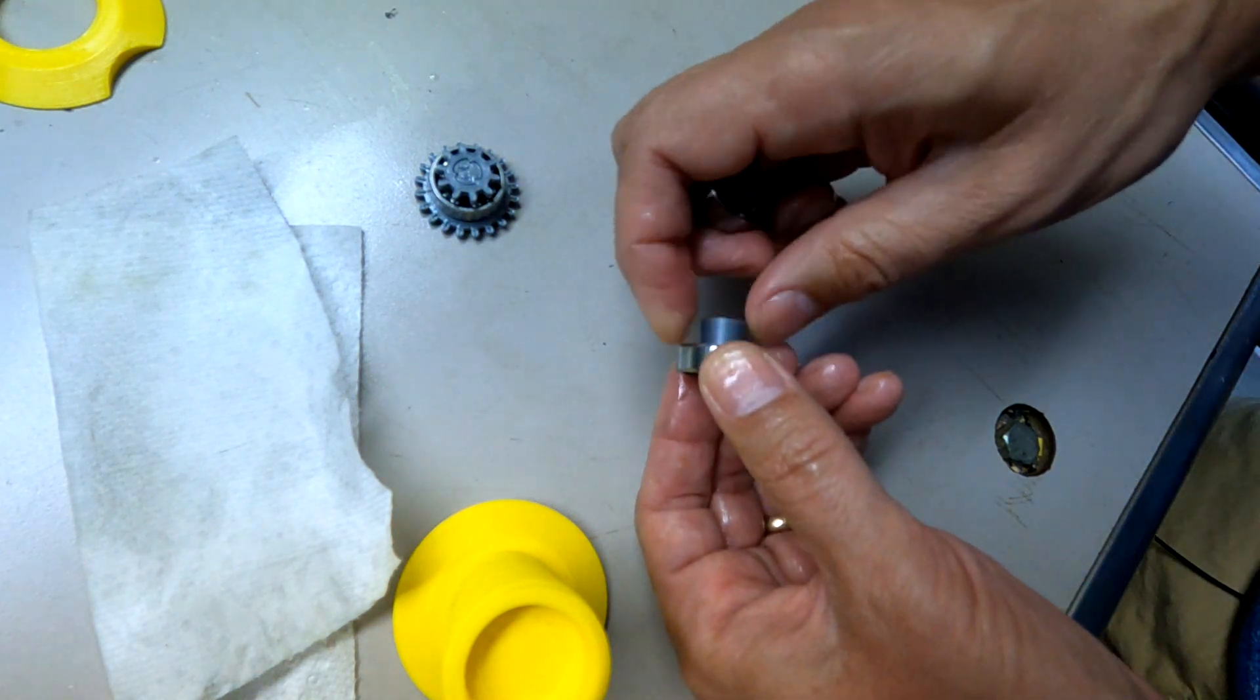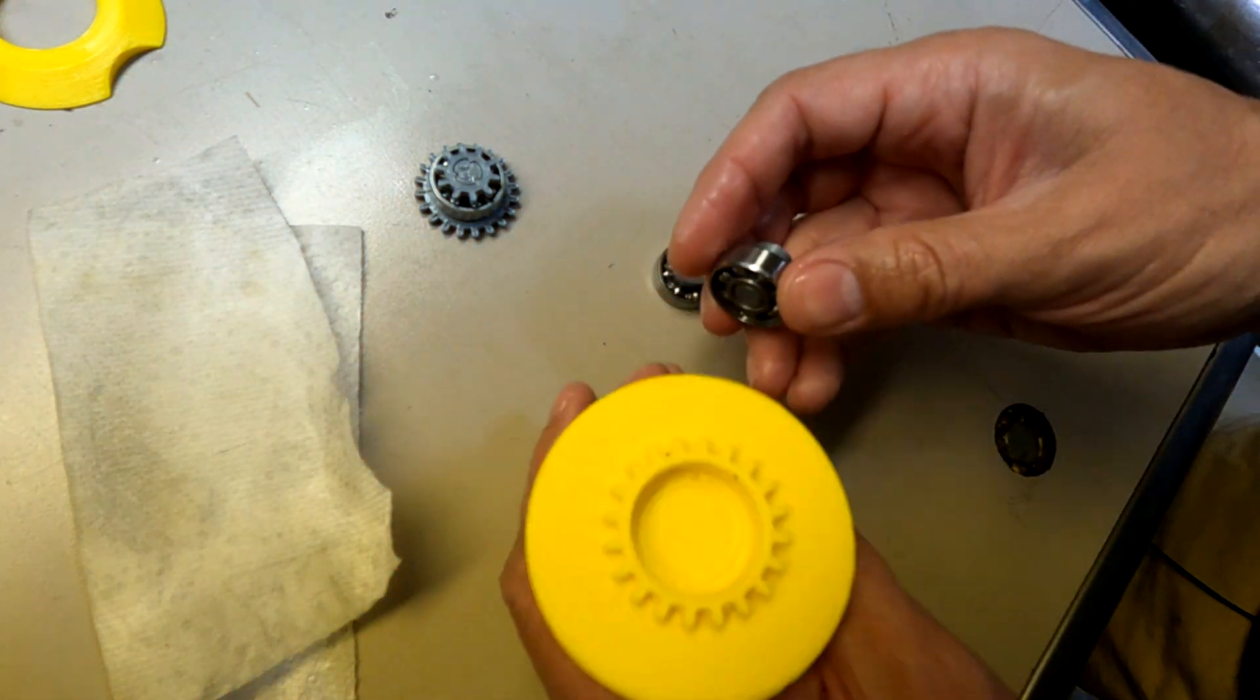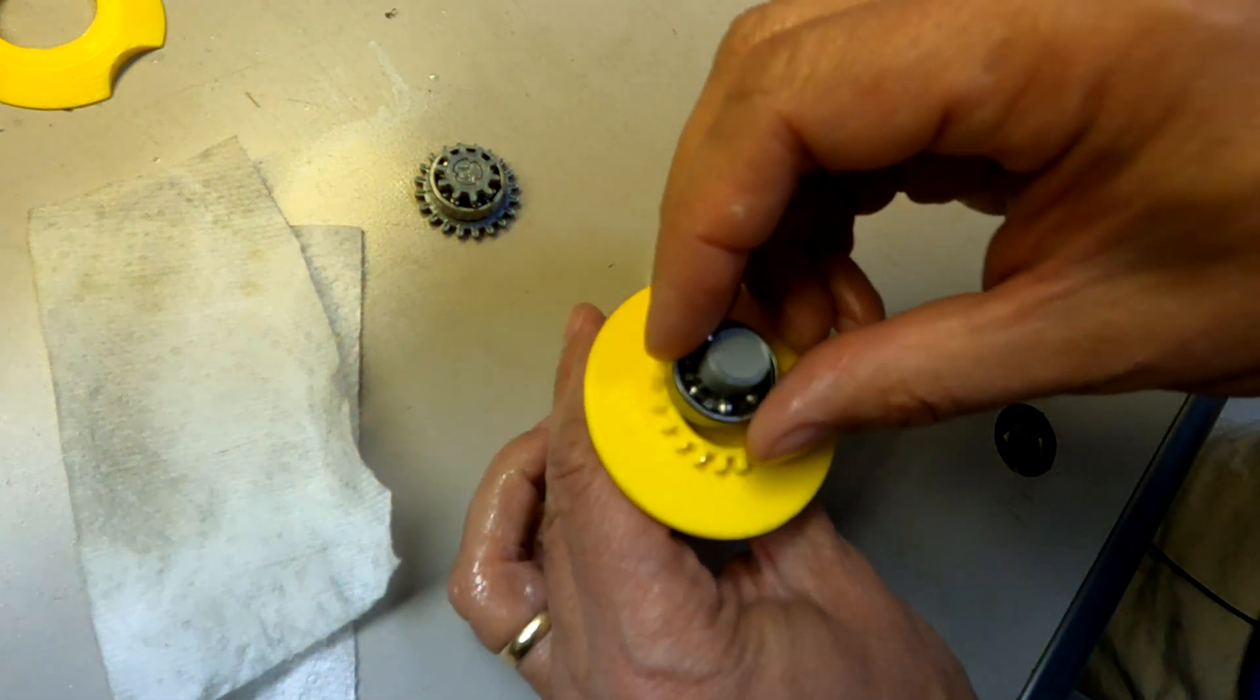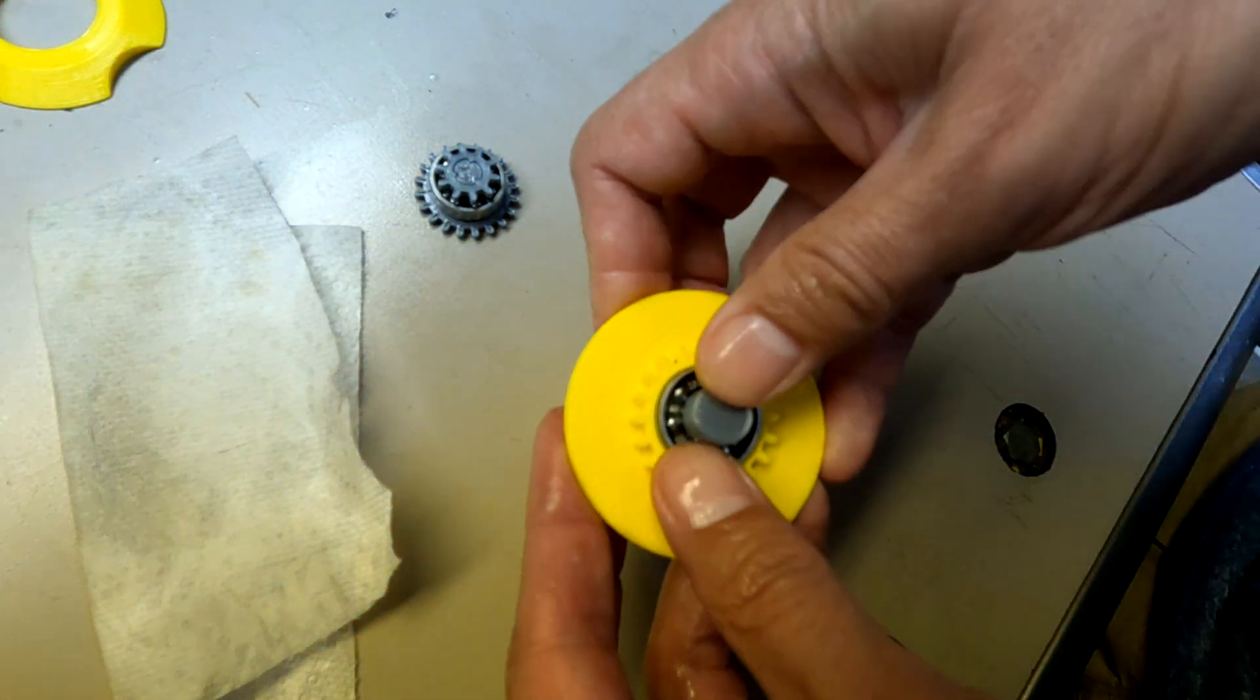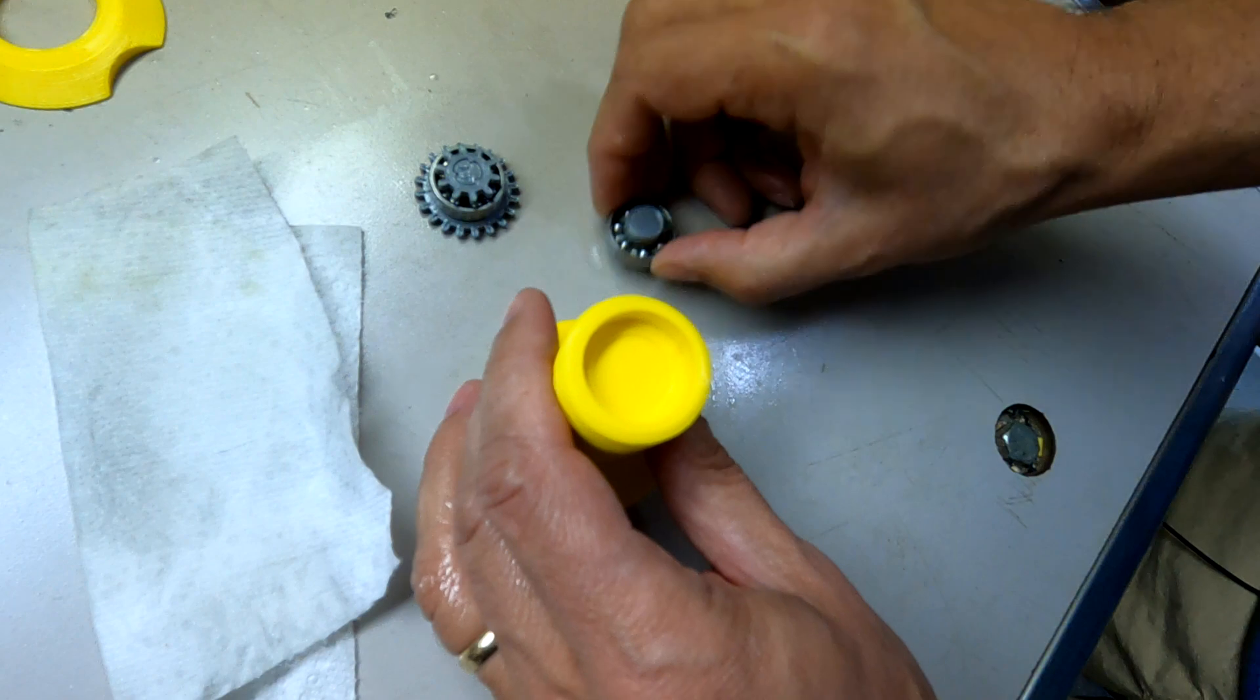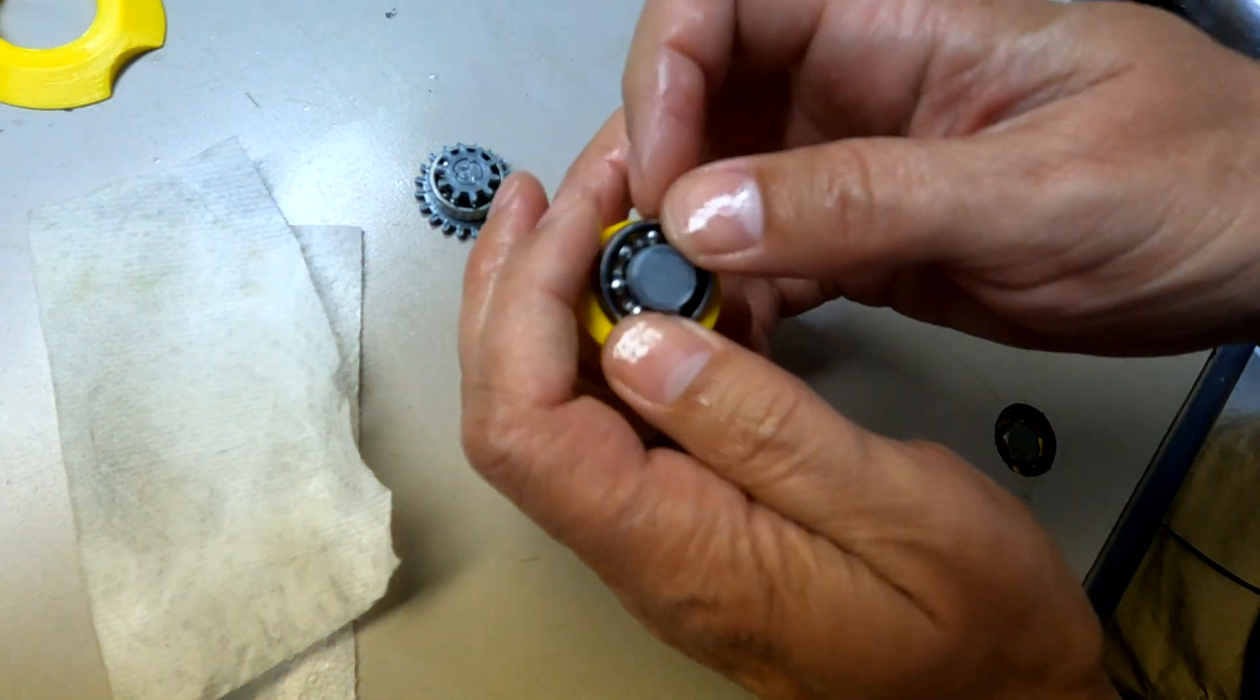And these two are different thicknesses. The taller of the two nubs goes into the spindle on the gear side. So this presses in place like this.